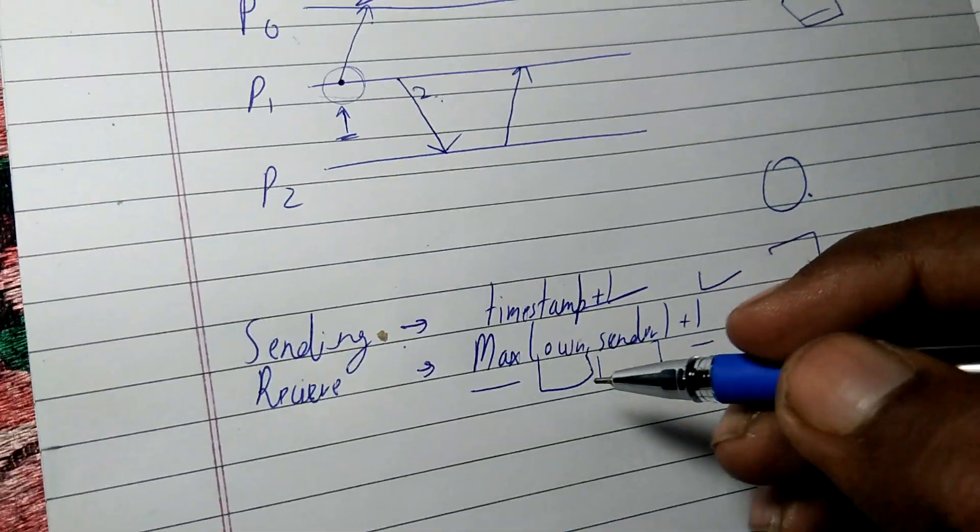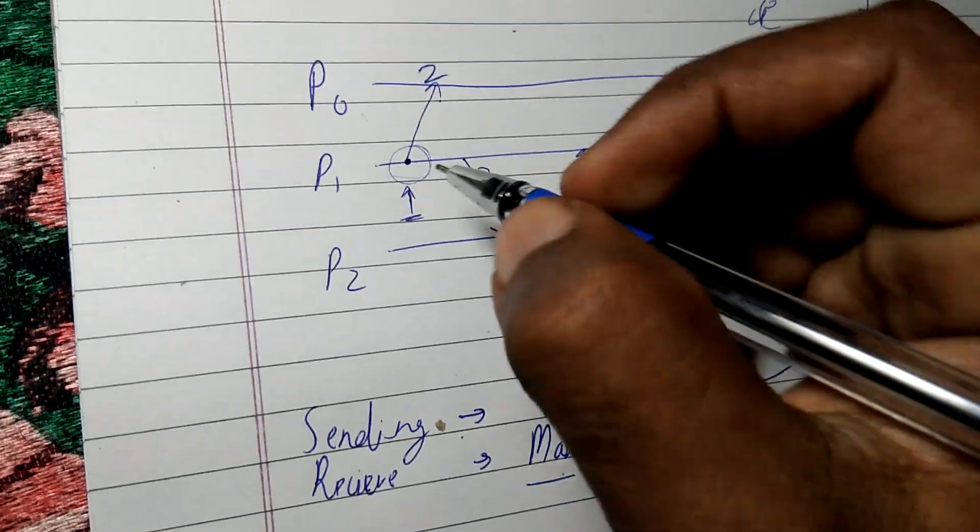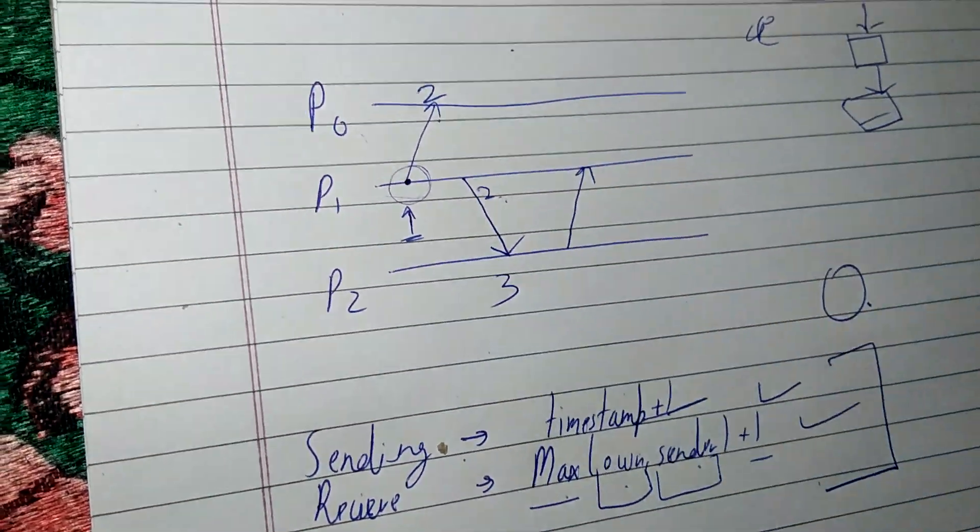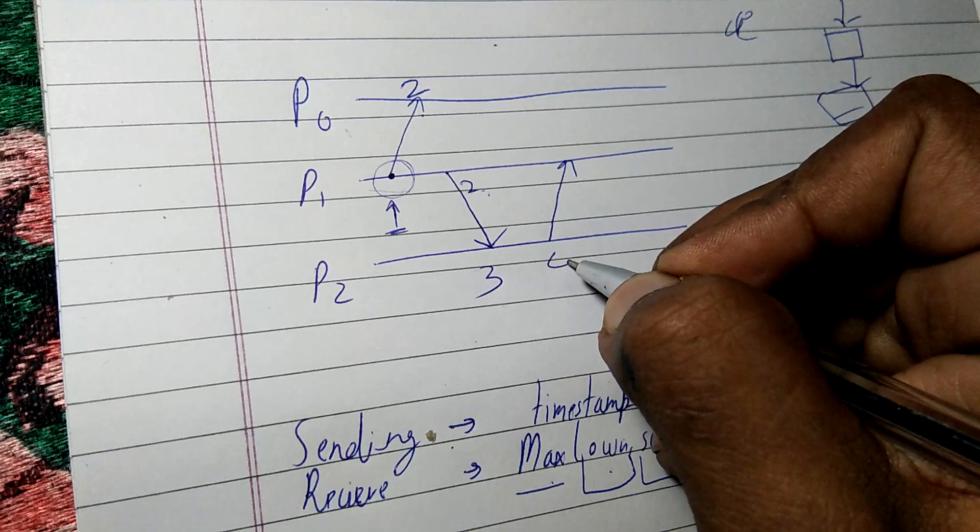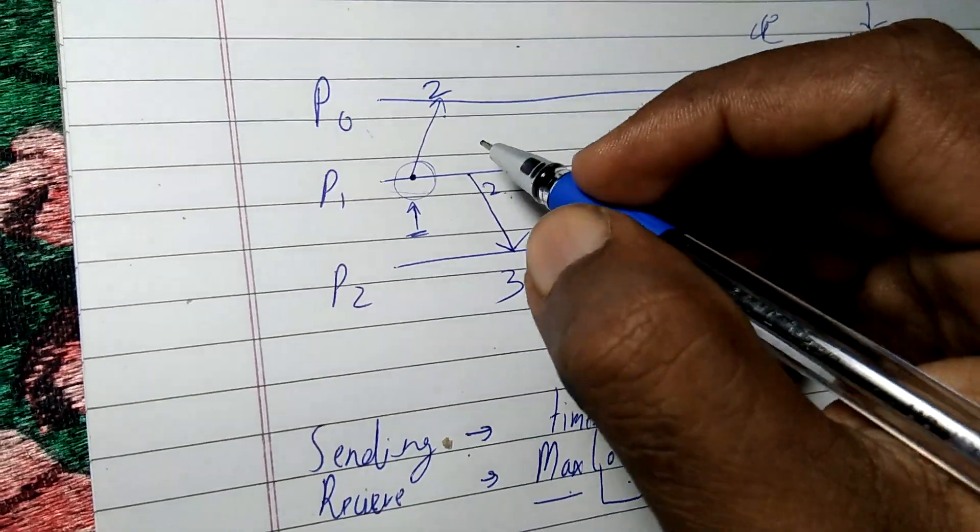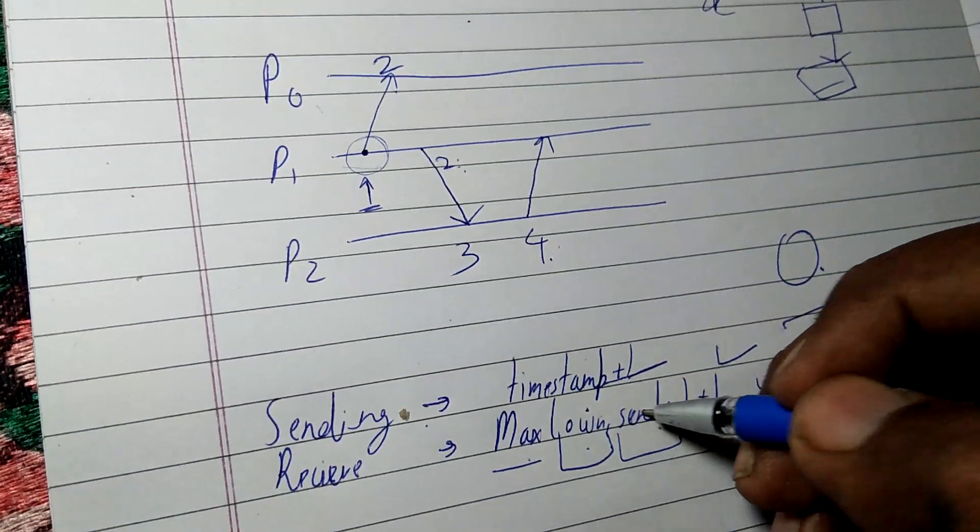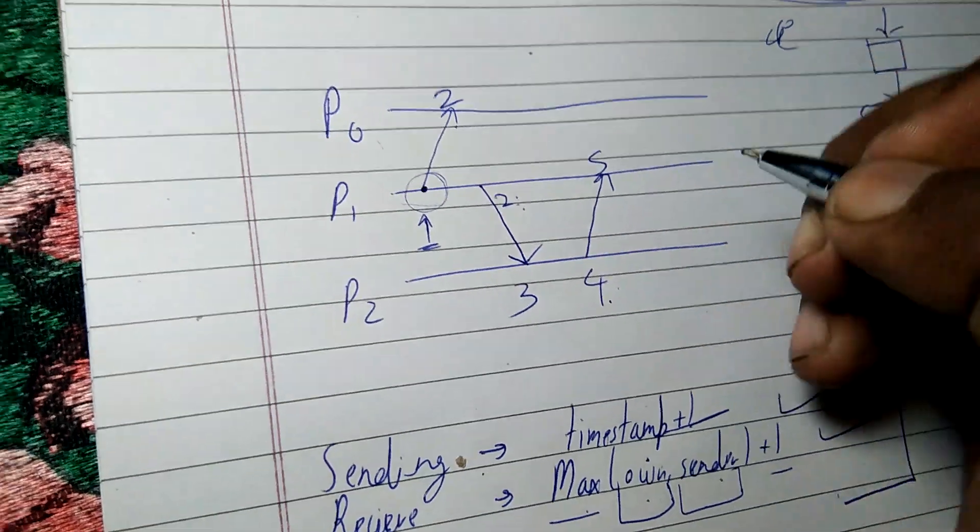0 and 2, that is max of 2 plus 1, that is 3. So now it is sending a message, we can again add a timestamp of 4. And it is receiving a message, then again we have to take max. It is having 2 and the sender has 4, so 4 plus 1 equals 5.